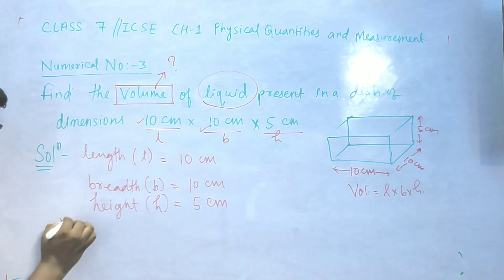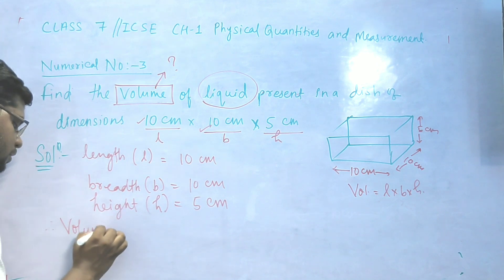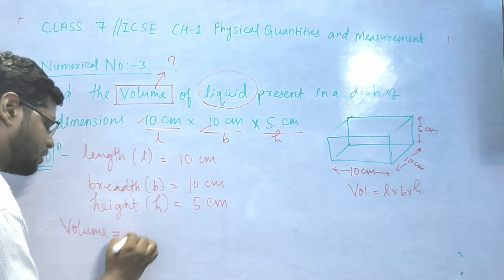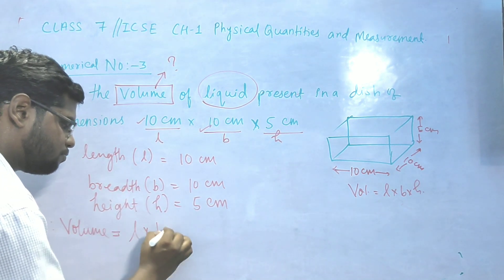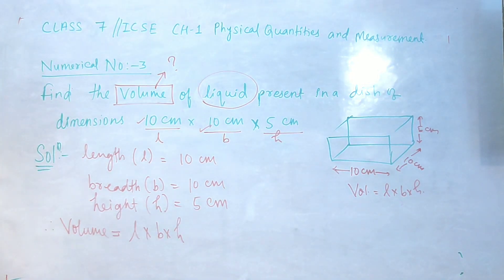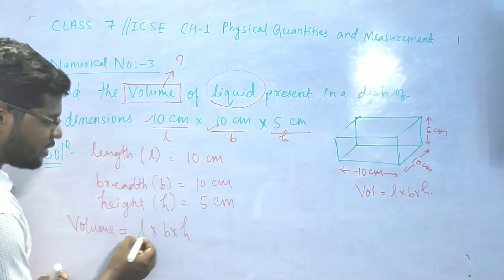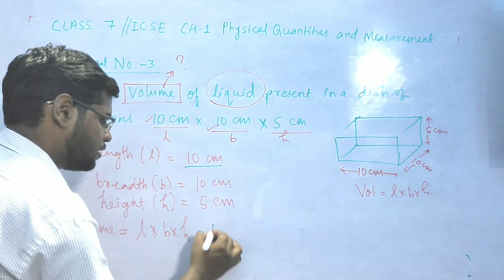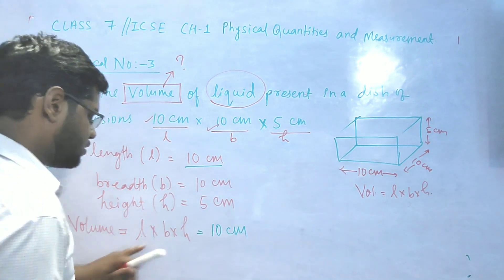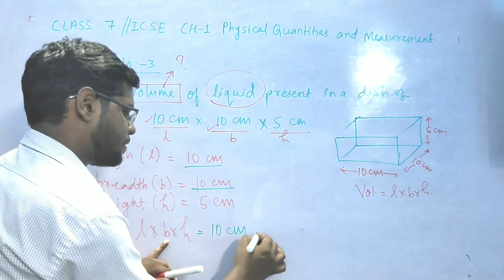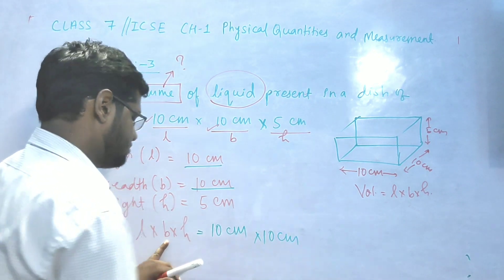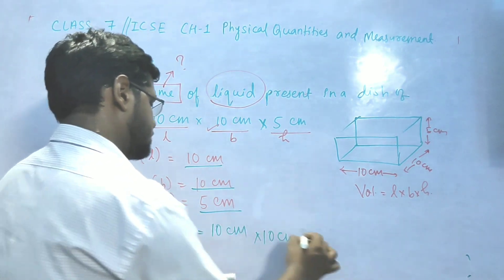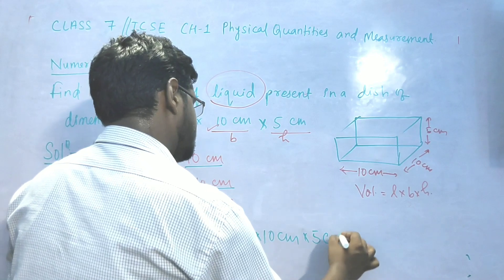So therefore volume, since it's a cuboid shape, then volume formula is L into B into H. So now we look at values. L ke place me 10 centimeter, B ke place me 10 centimeter, H ke place me 5 centimeter.